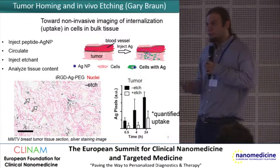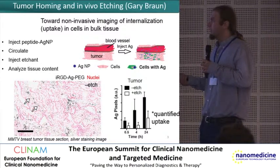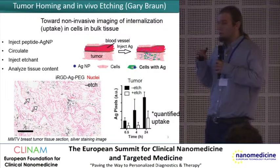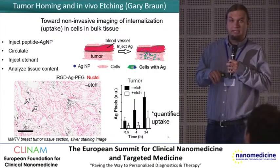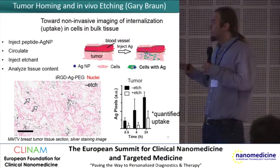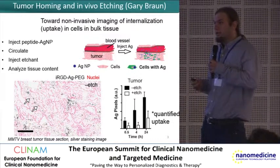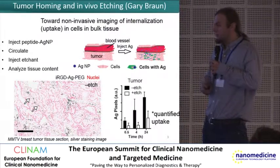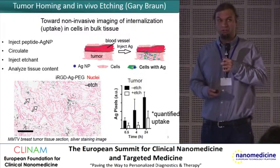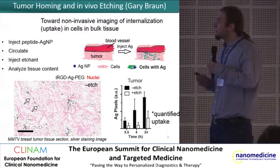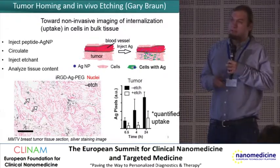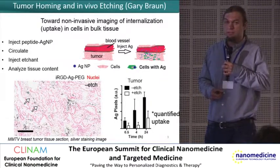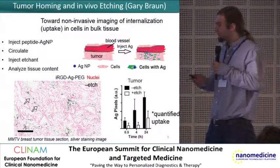What's unique about this system is it can be applied in vivo. You can inject particles, they circulate and target the tumor, then you inject the mild etchant, and in a living mouse the particles which are in tissue but not yet in cells will be dissolved away. In histology we can visualize the remaining particles and verify they are internal. We can then use the technique to follow the kinetics of internalization in a live tumor model, testing different peptides and monitoring tissue penetration pathways.